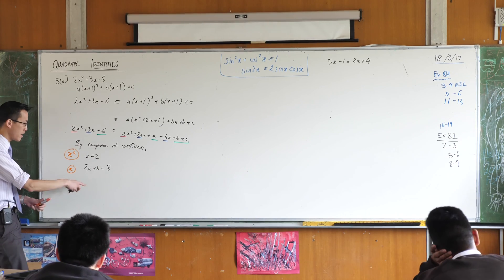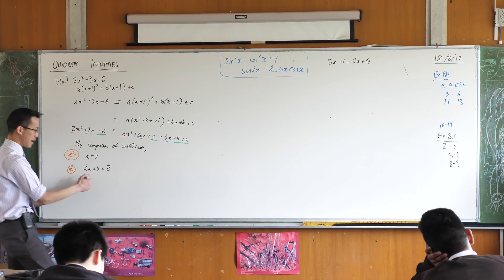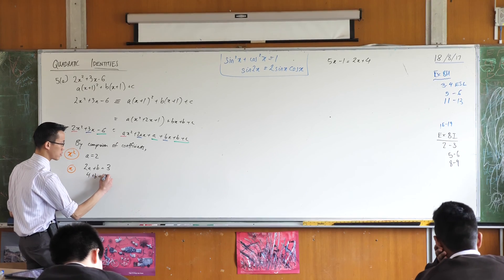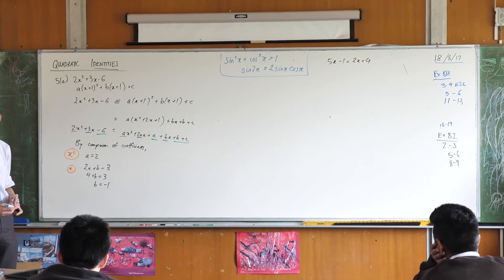So I might as well just work this out now, right? A is 2. So I can say 4 plus b equals 3. So now I know what b is.